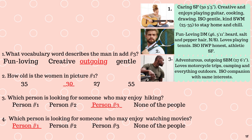Number three: Adventurous, outgoing SBM, 27, 6'1, loves motorcycle trips, camping, and everything outdoors. ISO companion with same interests.